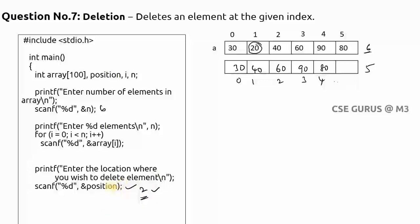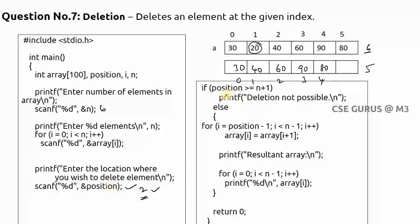So this is a logic where you can observe if position is greater than or equal to n minus 1. That means let us suppose the size is equal to 5, here the size is equal to 6. Let us suppose if I have given the size is 7, if I have given position equal to 7, I want to delete at position 7. Is there any position 7? No.